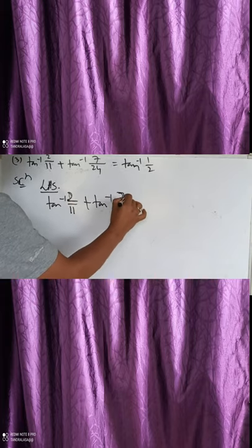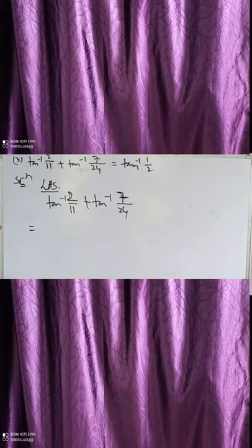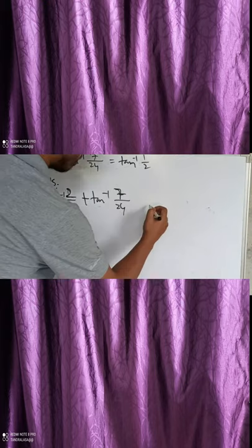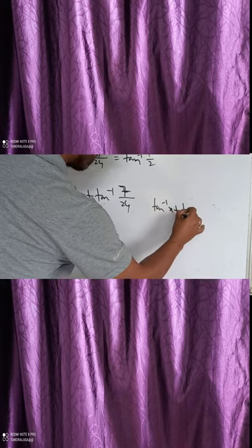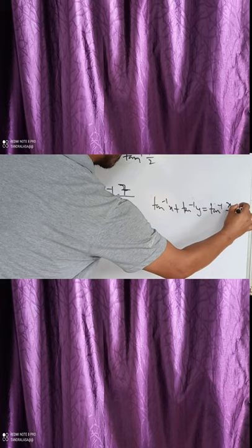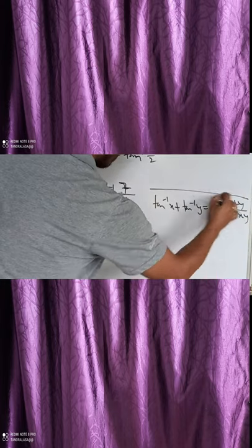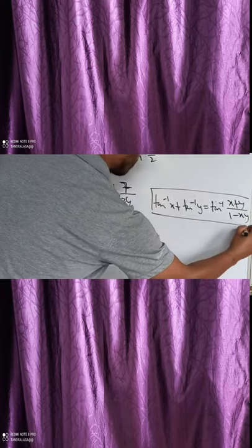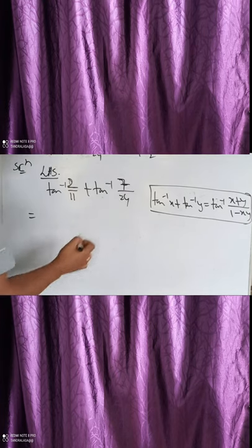Now for the next problem, we have to use the property: tan⁻¹(x) plus tan⁻¹(y) equals tan⁻¹((x plus y) divided by (1 minus xy)). This property is very important and we have to use it here.